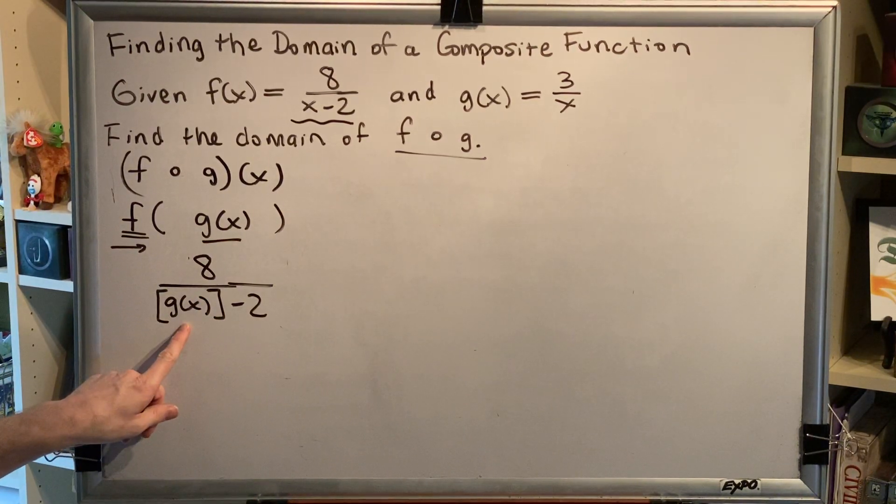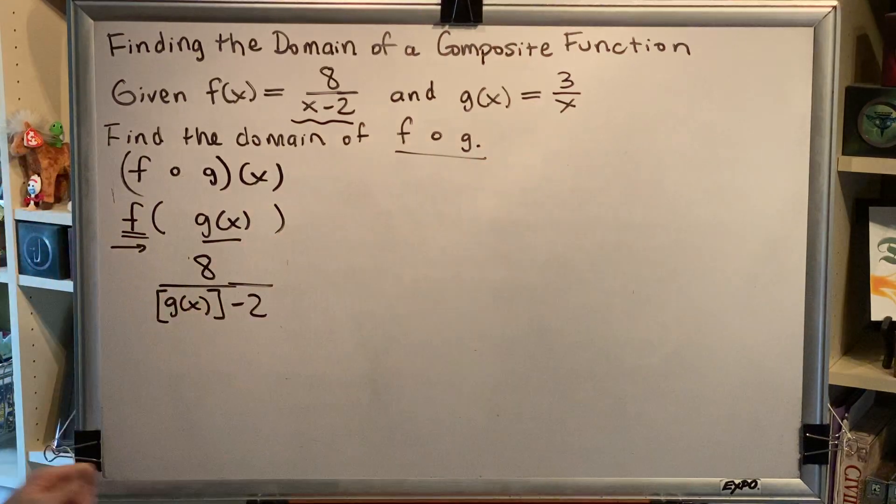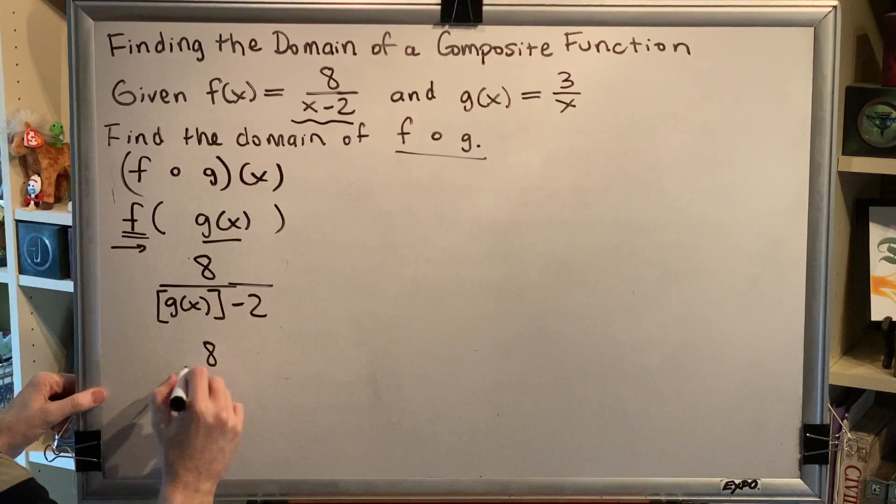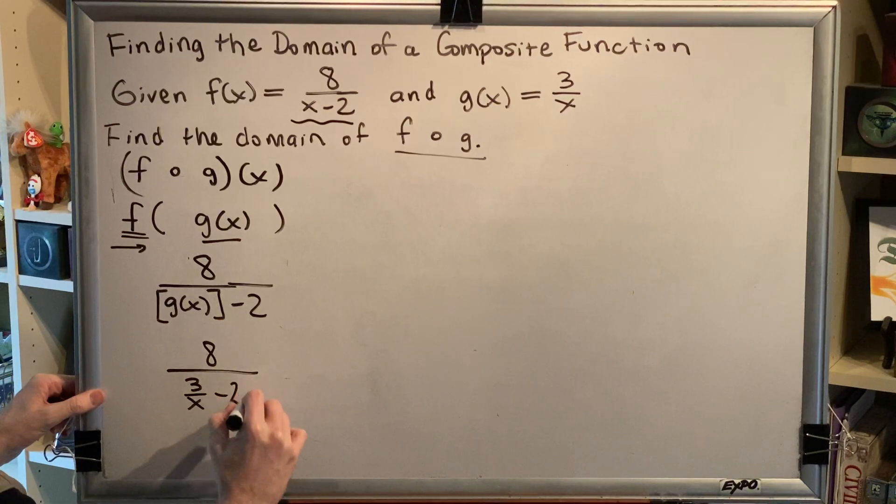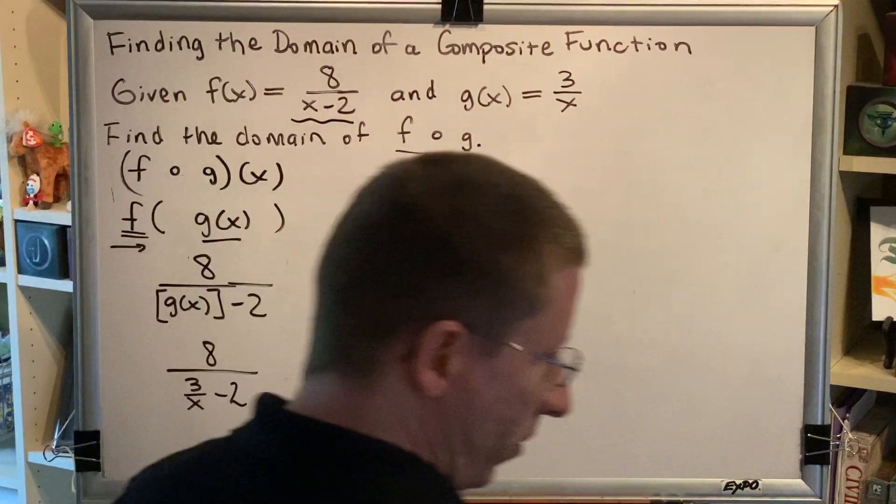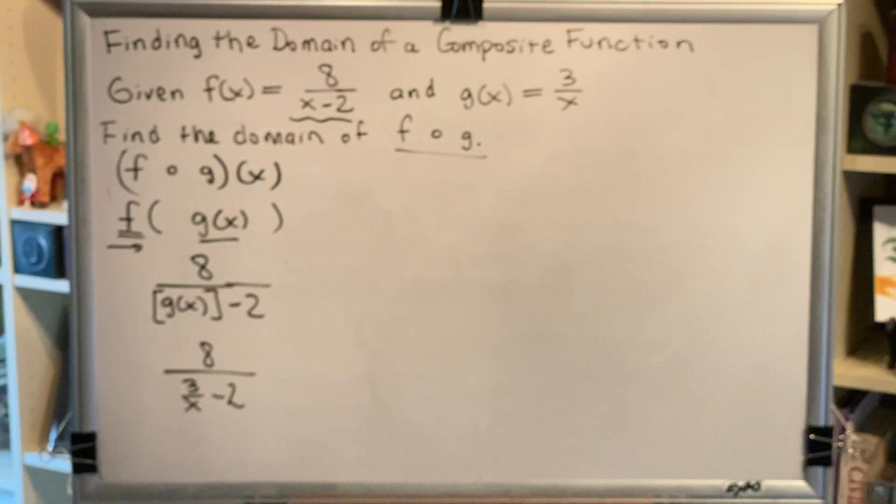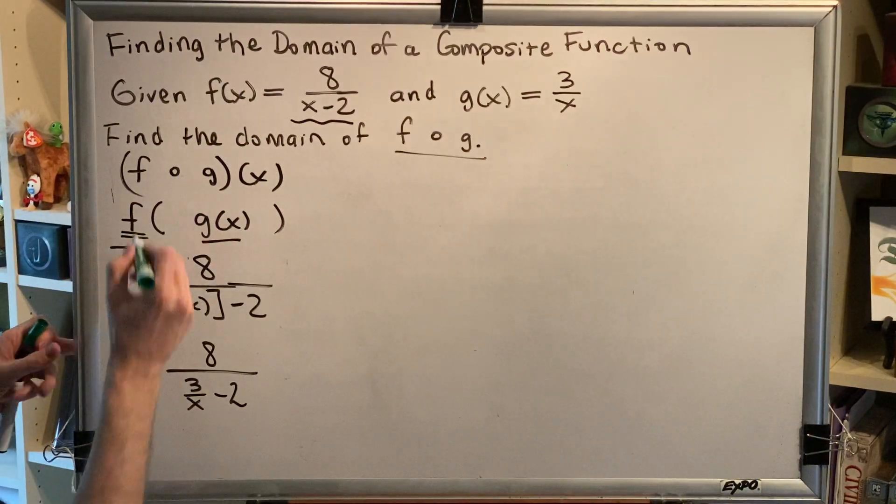Next, we replace g of x with what it equals in the problem. So we get 8 over 3 over x minus 2. It's important to note that this is the first line of algebra that I've written that does not have the names f and g.